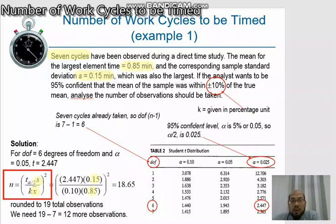Now we look at how this t-distribution table value is applied to this formula. First we have to look at DOF, which stands for degree of freedom value. In this case, because in the initial observation there are seven cycles or seven observation times, the degree of freedom value is 7 minus 1, n minus 1. So 7 cycles already taken, the degree of freedom value is n minus 1, so 7 minus 1 is 6. We refer to 6 here.